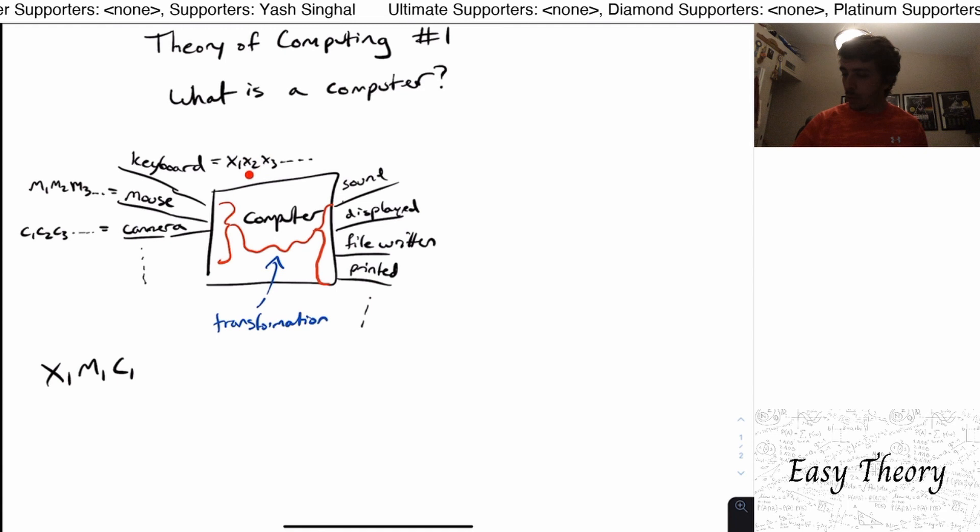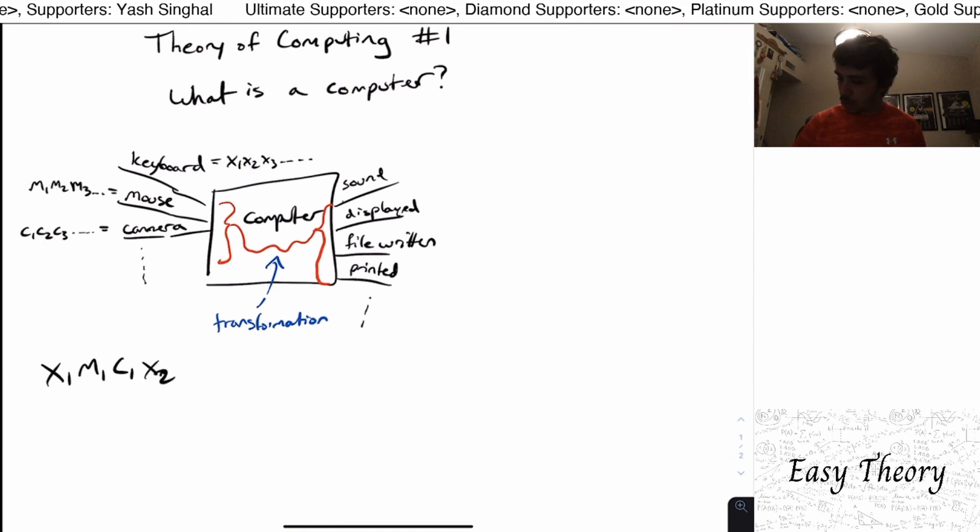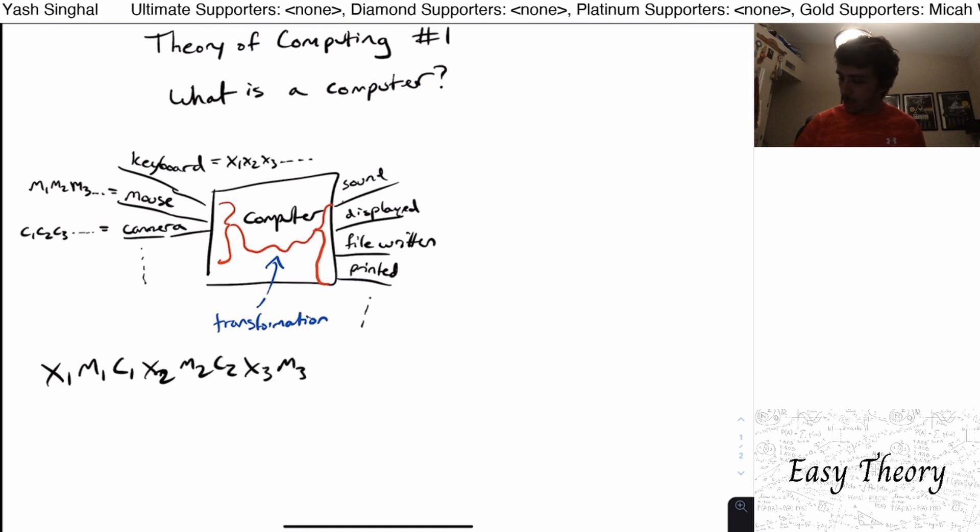And then now we go back through the process again. So here we can take now x2, m2, c2, x3, m3, c3.